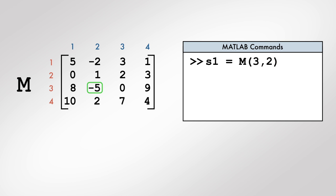The row number and the column number, also known as the row index and the column index, are separated by a comma. By assigning an output variable, we can store the extracted element in a new variable named S1.